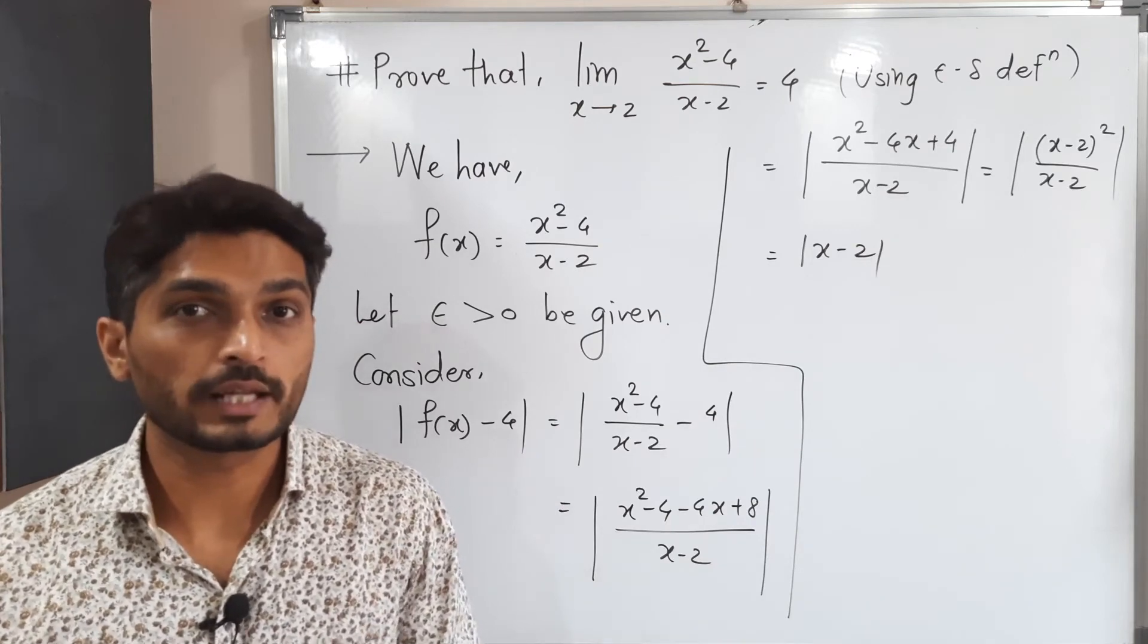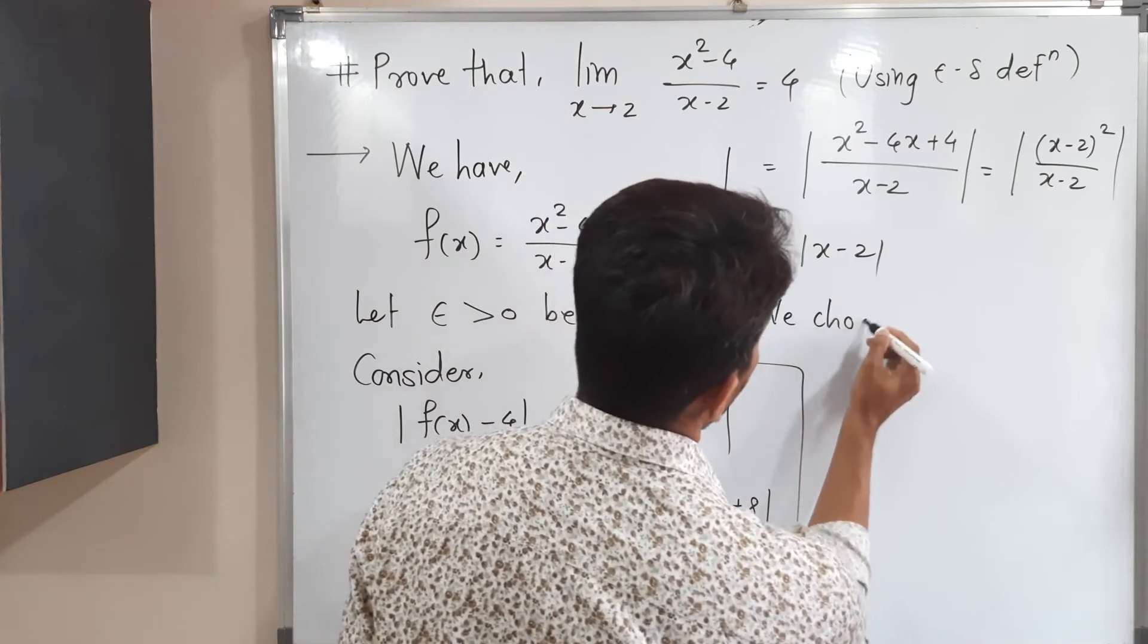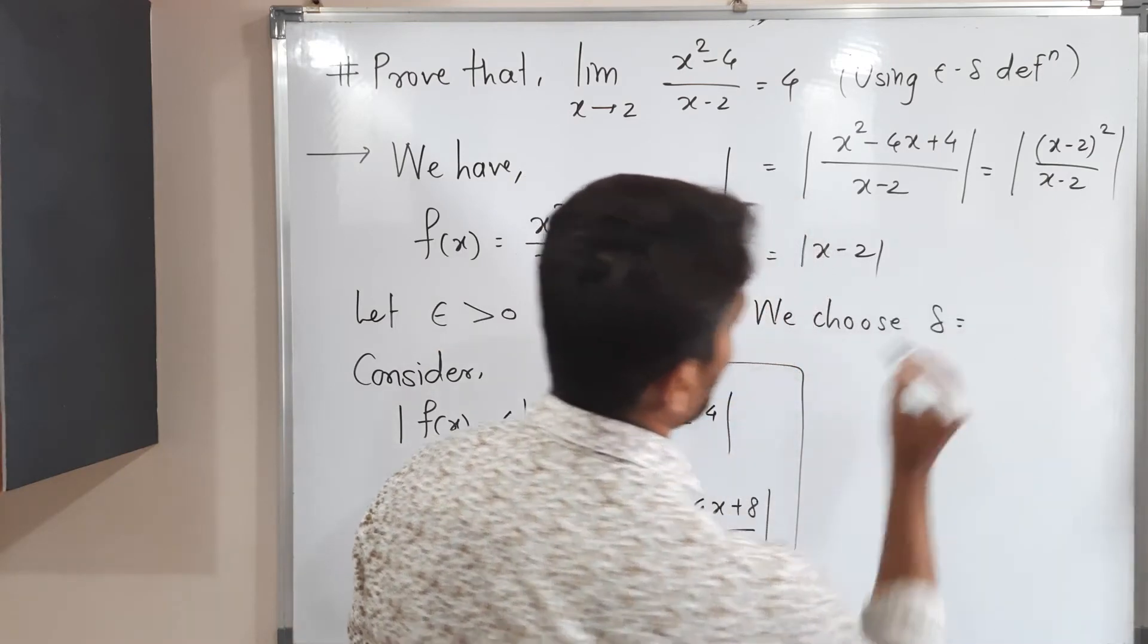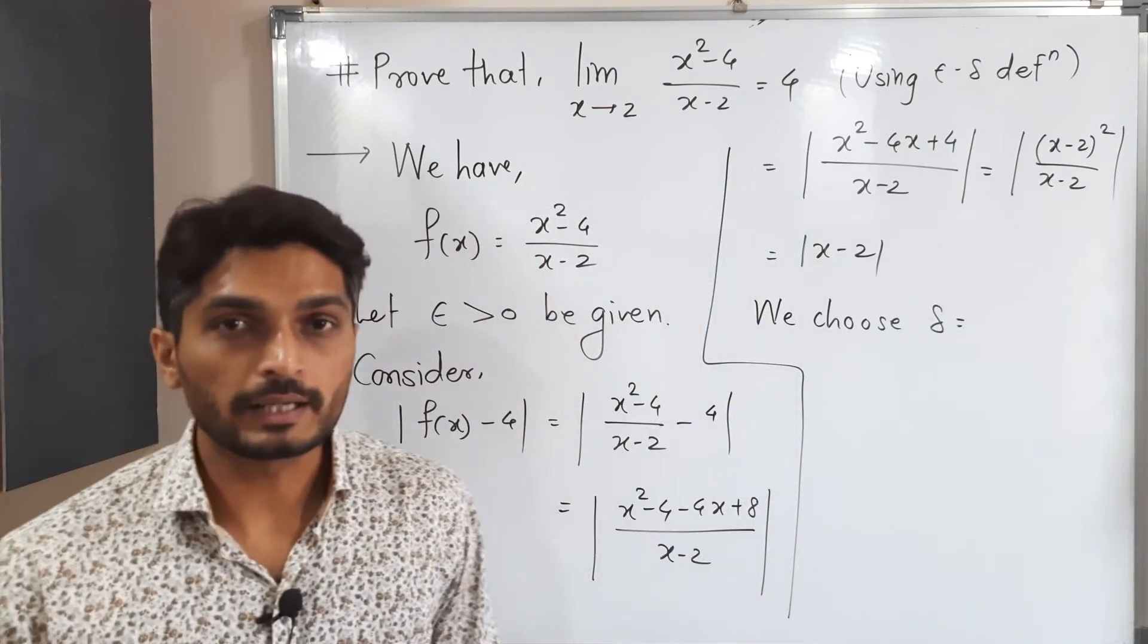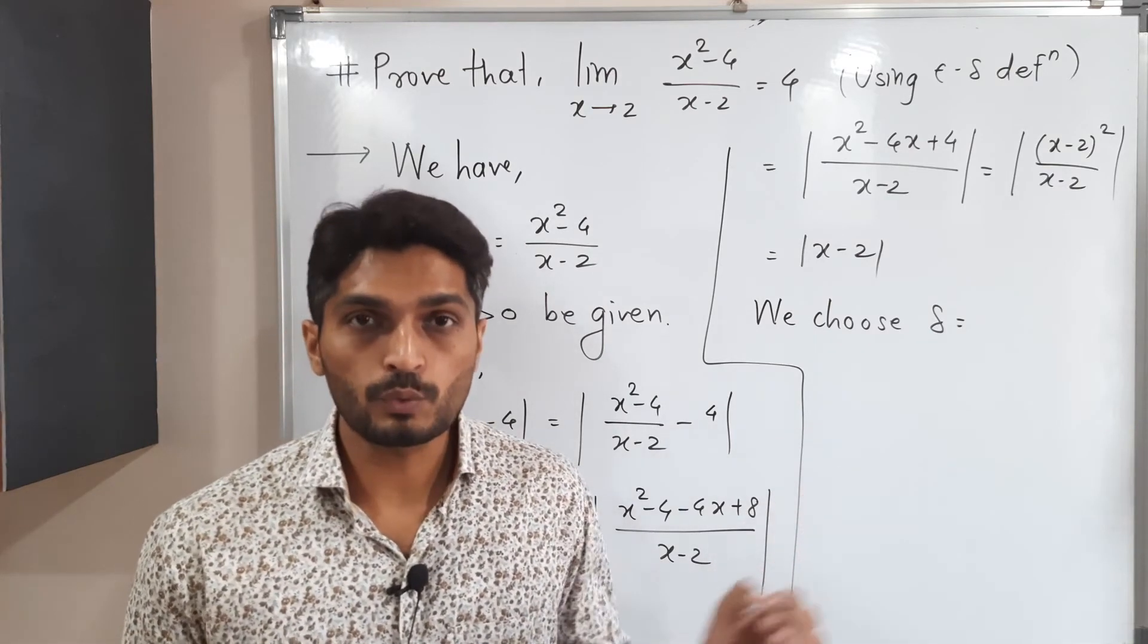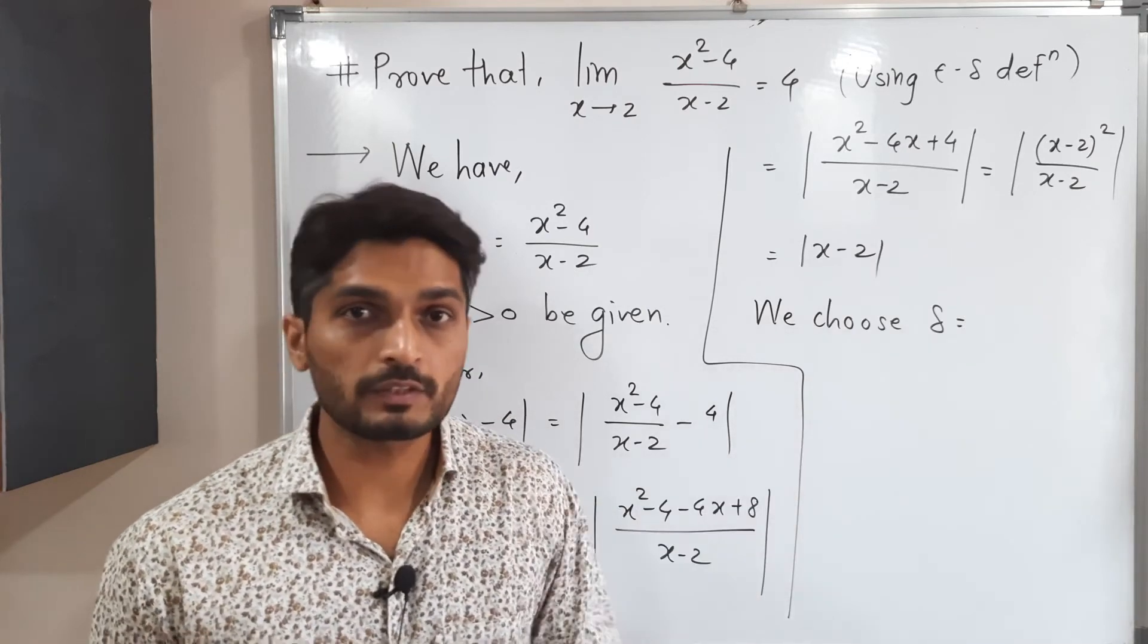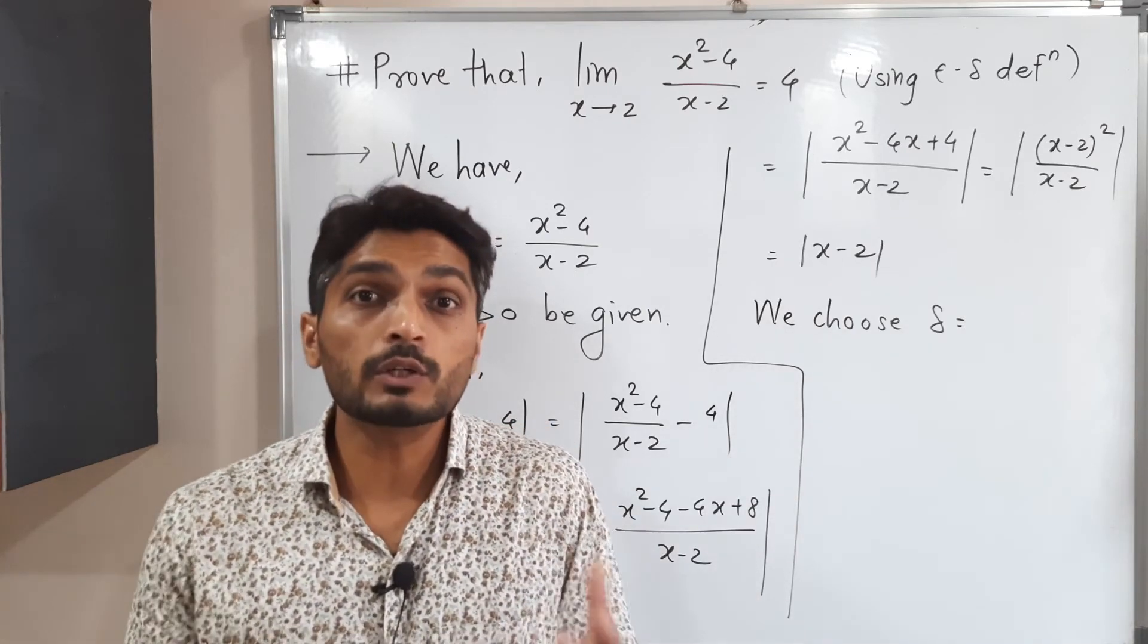After that we have to select our delta. We choose delta is equal to... Here we have to select our delta. But in some cases it will be difficult to select delta here. So what will we do? We will keep it blank. We will go further.